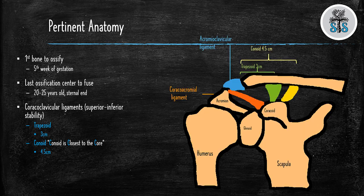Here's a visual representation of the humerus, the scapula, and the overlying clavicle and associated ligaments. You have your acromioclavicular ligament, which stabilizes the AC joint, and then you have your coracoacromial ligament, and then the conoid and trapezoid ligaments, which make up the coracoclavicular ligaments.